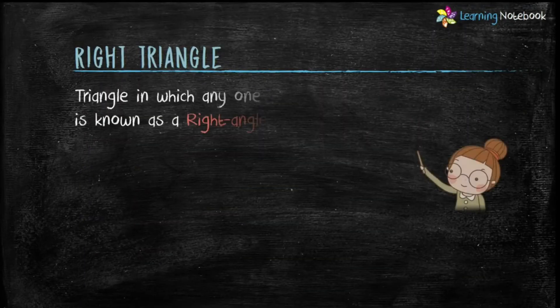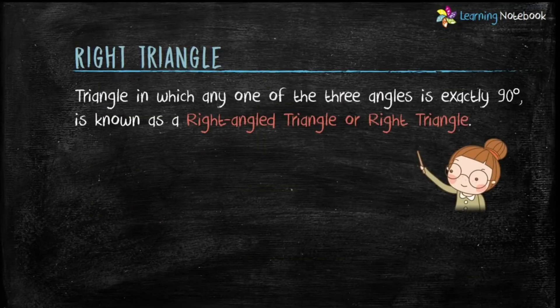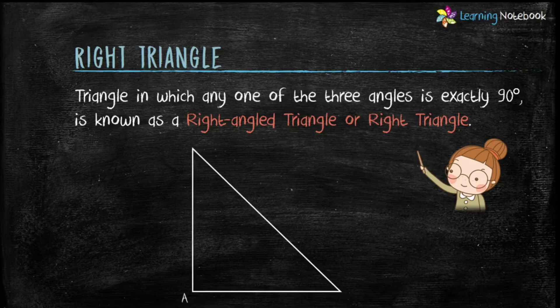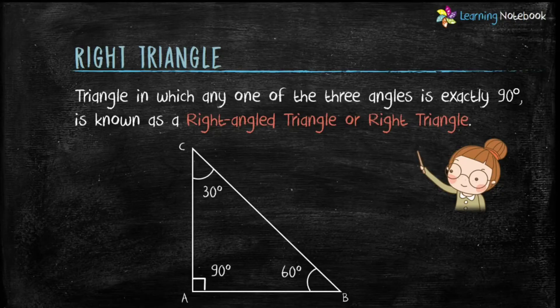The last type of triangle is right triangle. A triangle in which any one of the three angles is exactly 90 degrees is known as a right angle triangle or right triangle. Here triangle ABC is a right triangle because one of the angles, that is angle A, measures 90 degrees.